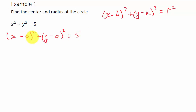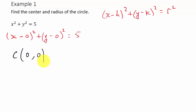We can see that h is 0 and k is 0, because x minus 0 is x, and y minus 0 is y. So our center (h, k) is (0, 0). For the radius, remember this number is r squared, so r is the square root of that number, which is the square root of 5.